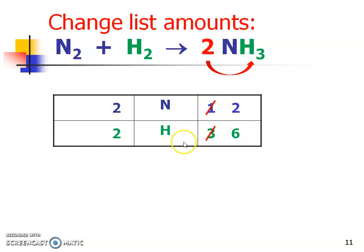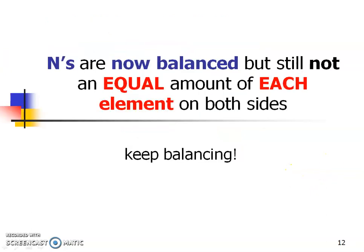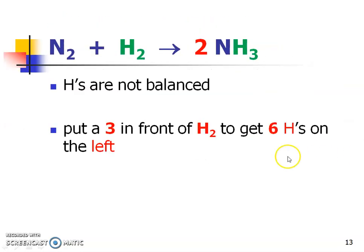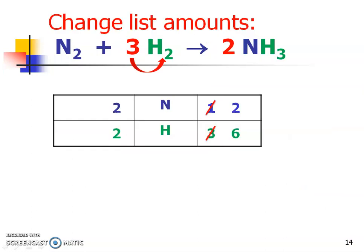The two nitrogens on both sides are nicely balanced, but we have different amounts of hydrogens on both sides, so we're not balanced yet — we have to keep balancing. I have six hydrogens on the right side. To get six hydrogens on the left, I'm going to put a three there — and I have to change my amounts accordingly. Now I have the same number of nitrogens on both sides and the same number of hydrogens on both sides. We are now balanced!